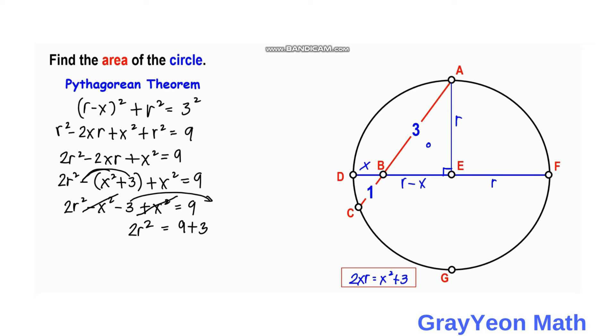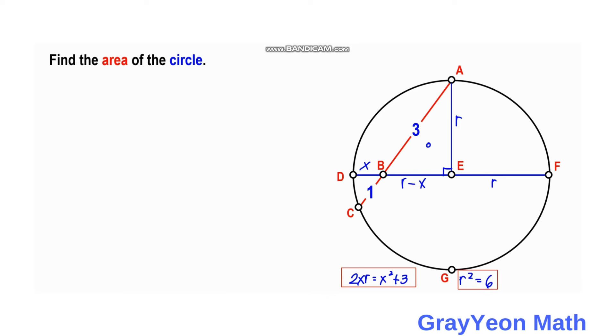Moving the negative 3 to the right side, this becomes 2R squared equals 12. Dividing both sides by 2, we get R squared equals 6.